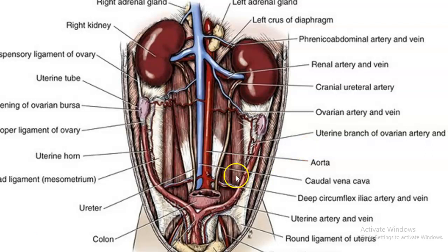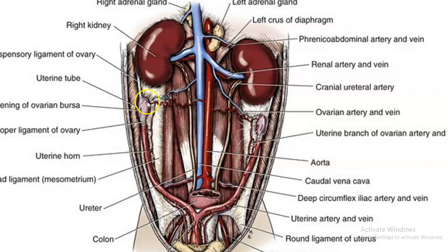Looking at the anatomy: we see the aorta, vena cava, kidneys, left adrenal gland, ureters, and then the round ligaments of the uterus — which attach the uterus to the body wall. We have the ovarian arteries and veins supplying blood to the ovaries and uterus, the suspensory ligament of the ovary holding the ovary and uterus suspended cranially, and the left and right uterine horns with the uterine body. The bladder sits ventral to this structure.